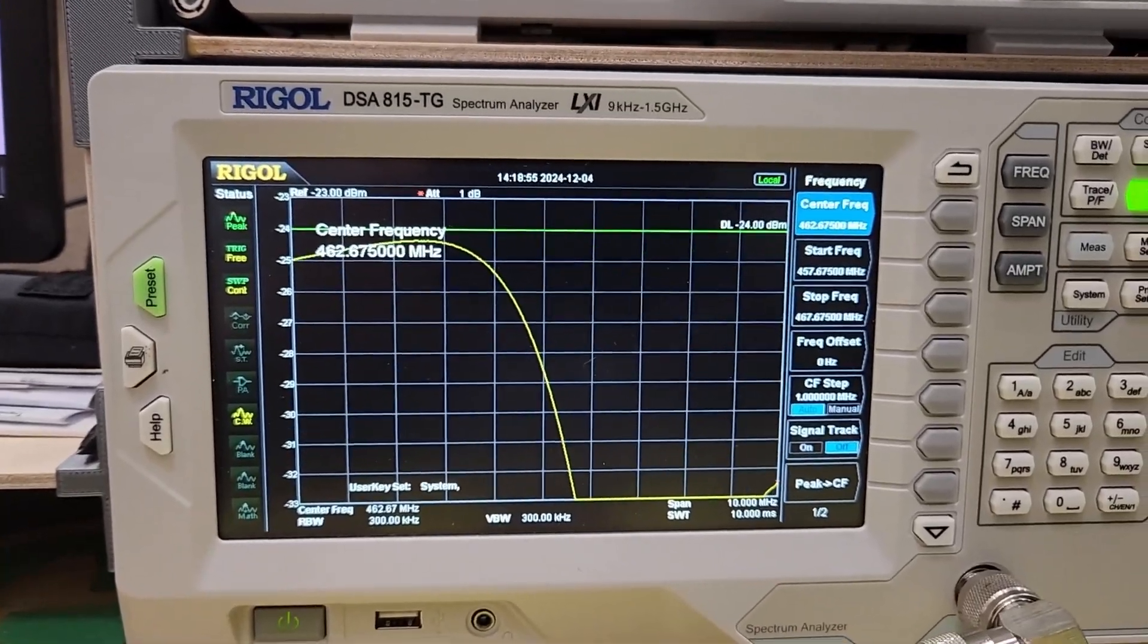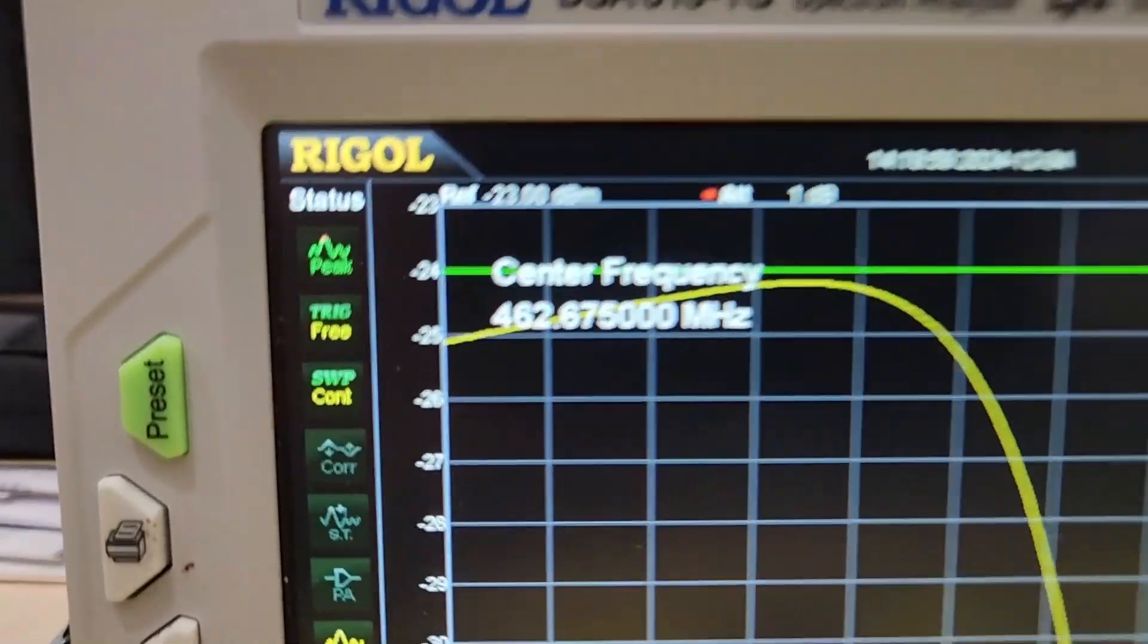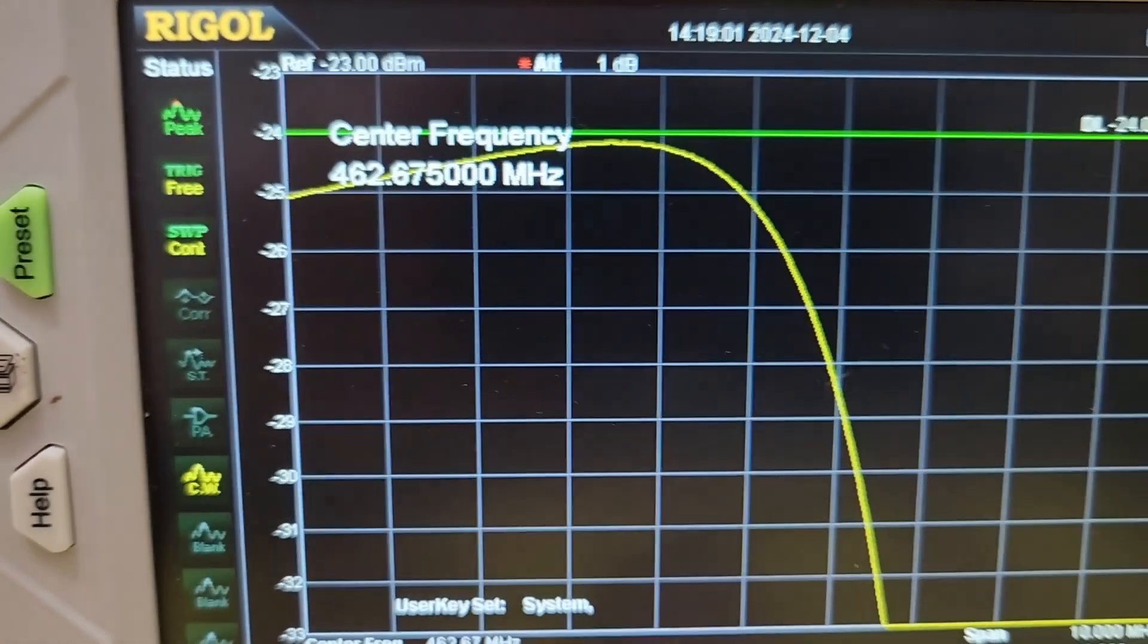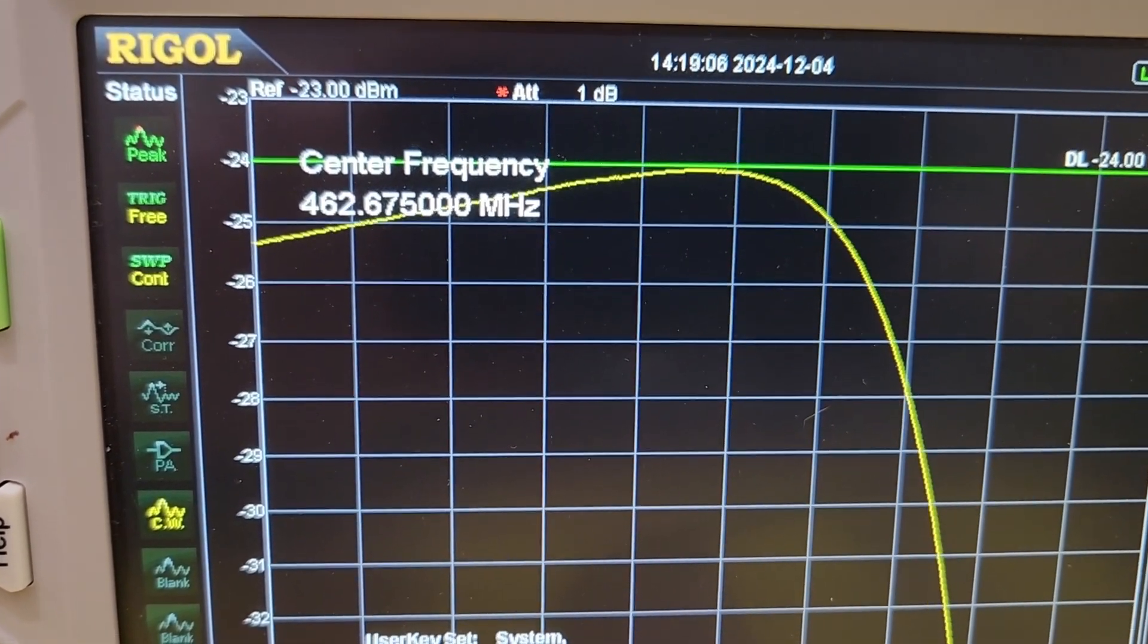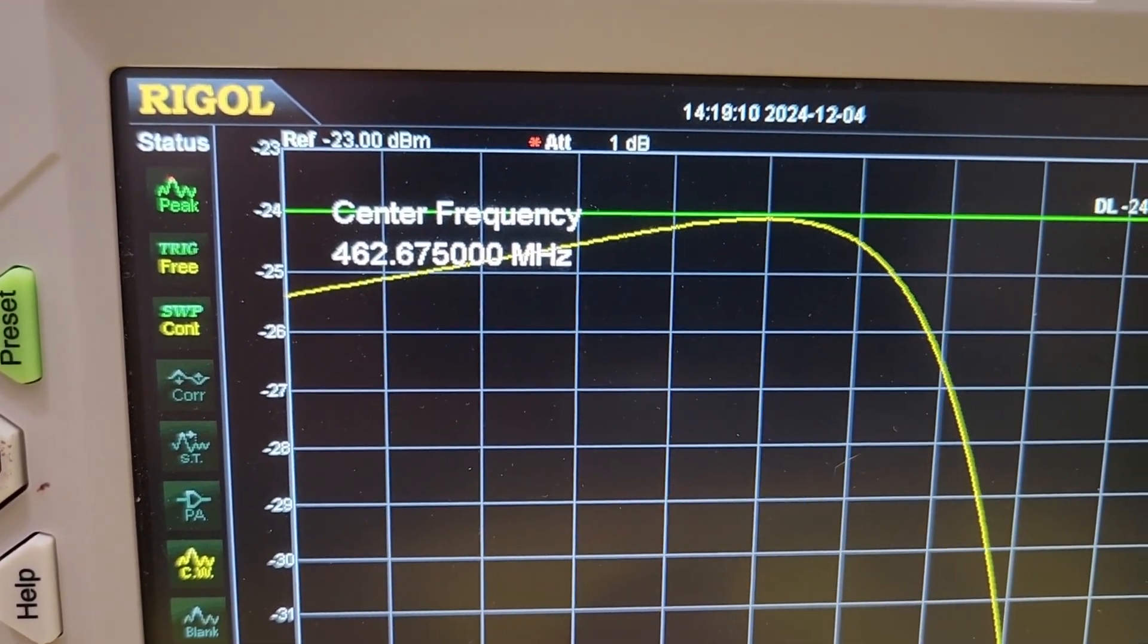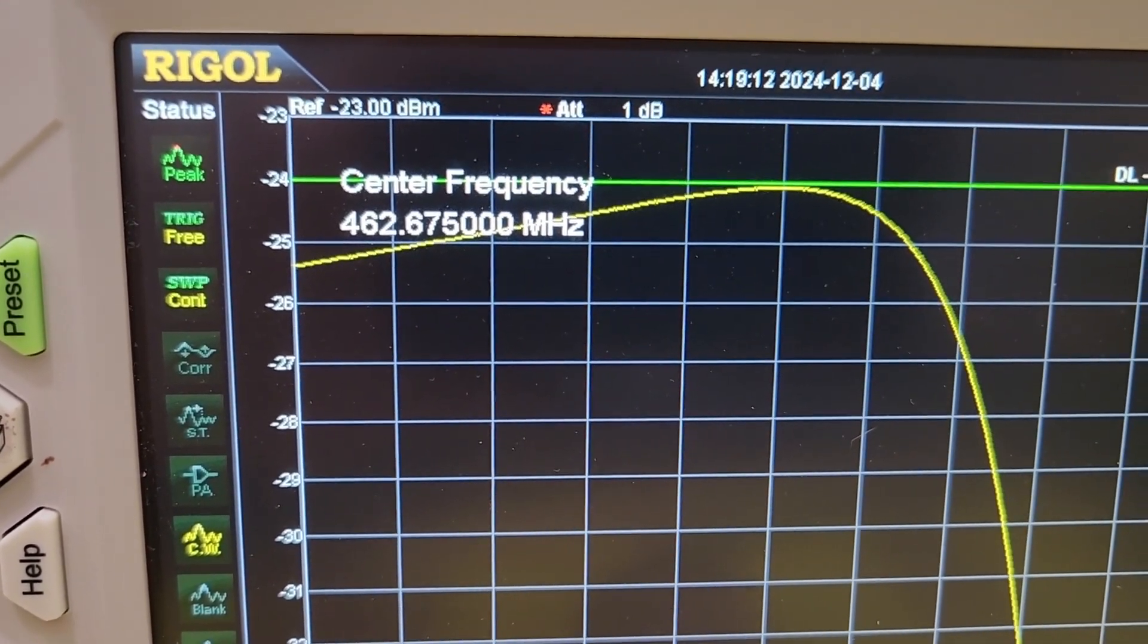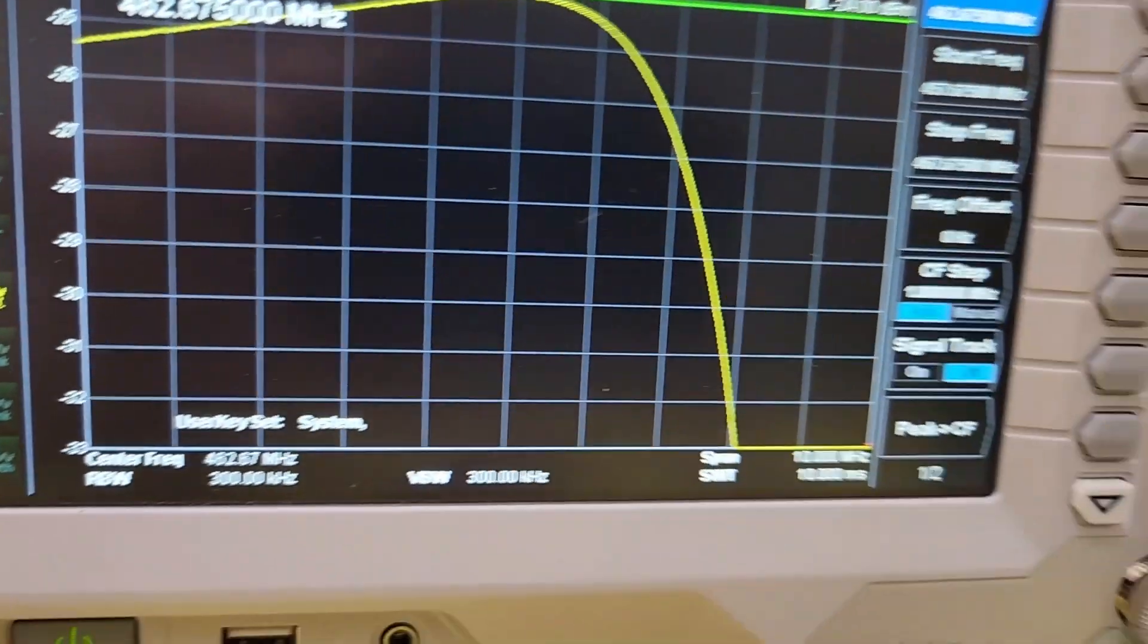To save time, I will pause the video until we get close to that. Okay, we are getting closer here. We're set for 462.675, and we're going to just peak it right about there for our bandpass. That looks pretty good. Now we'll go take a look at our reject.